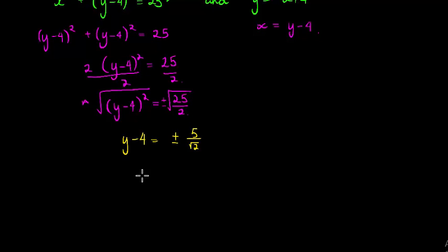That means that y is equal to... I'm just going to change this so that we have rational denominators. We multiply the numerator and denominator with √2, that makes it plus or minus 5√2 divided by 2. I'm adding 4 on both sides, so on this side I've got 4 plus or minus 5√2 over 2.